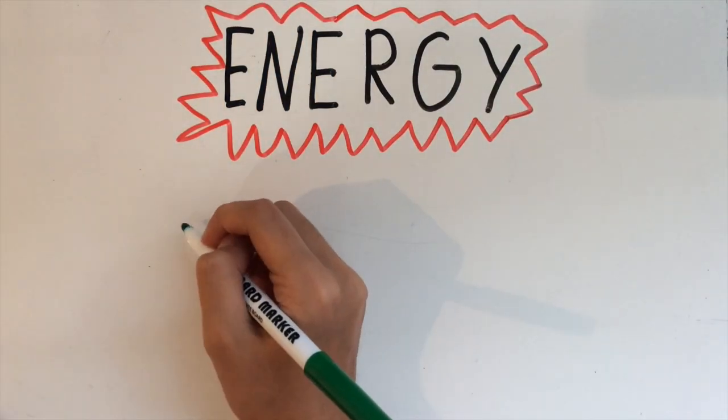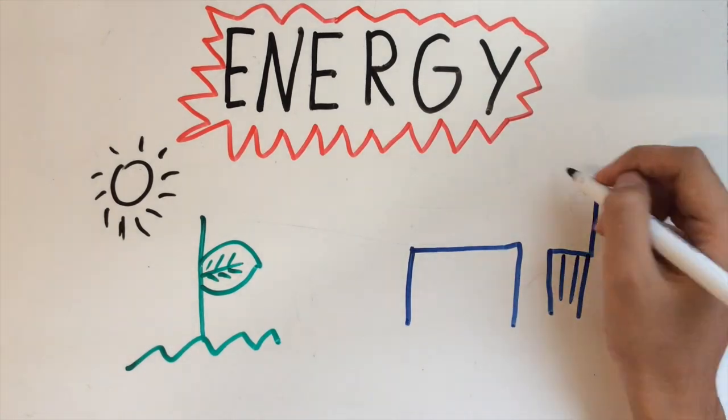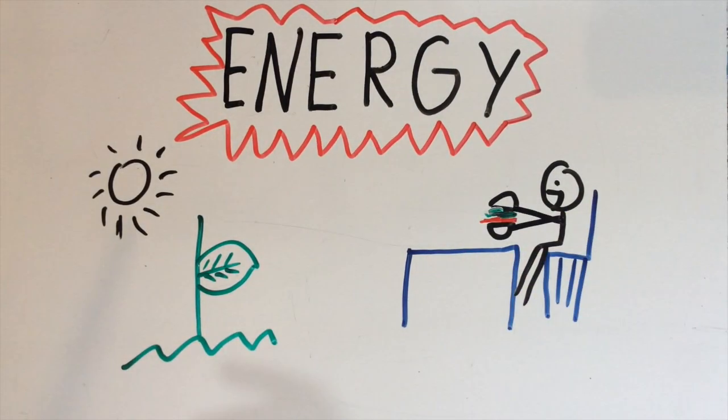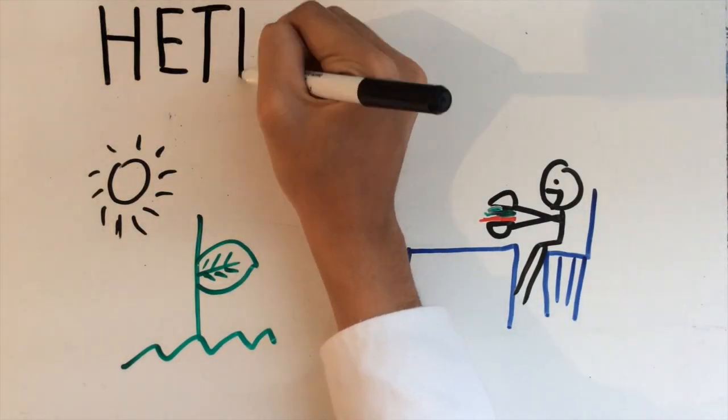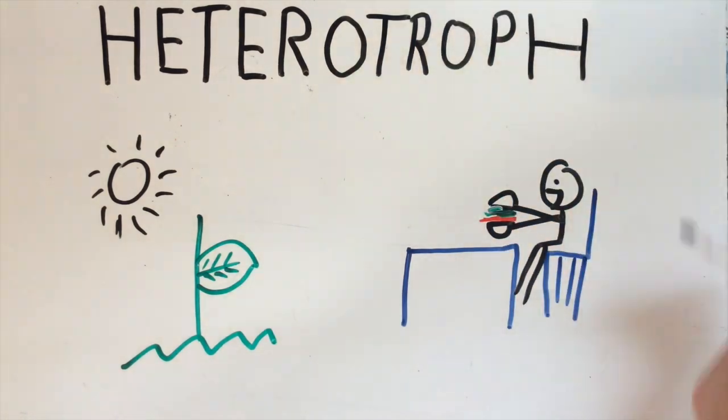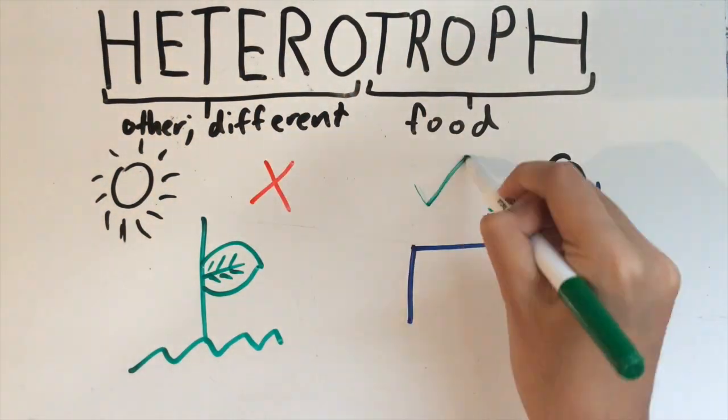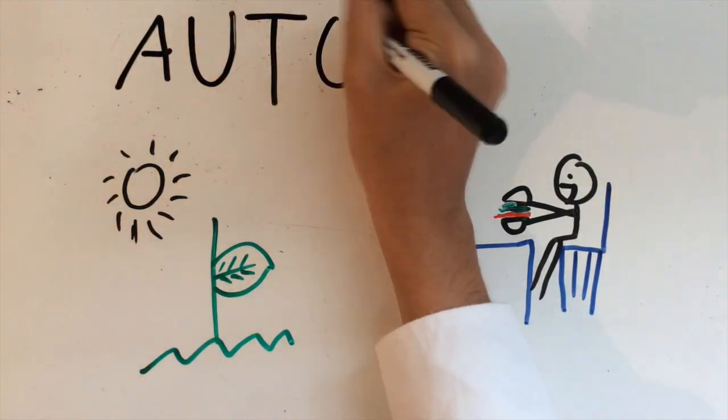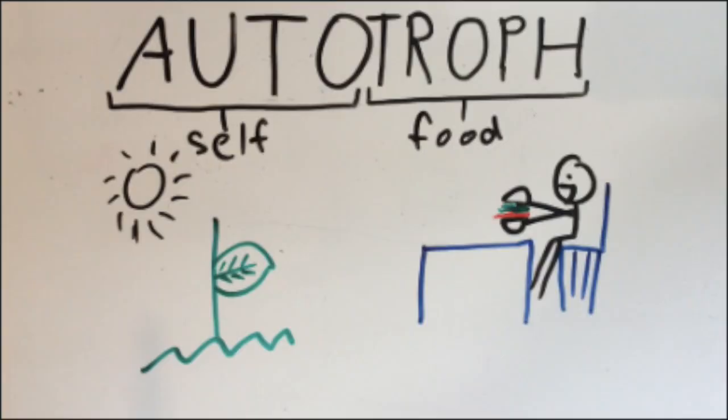Organisms get energy by either producing their own food or consuming food. A heterotroph is an organism that can't make its own food, so it has to consume it. For example, a human. Hetero meaning other and troph meaning food. An autotroph is an organism that can make its own food. Auto meaning self and troph meaning food or eat.